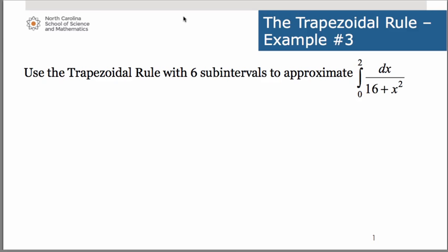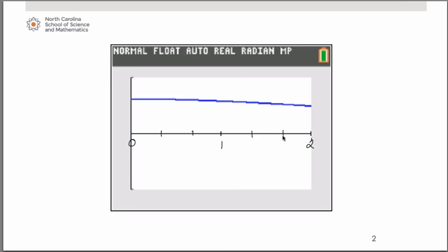We're going to use six subintervals to do that. Let's take a look at what we're trying to do by looking at the graph. Here is the graph of the function 1 divided by the quantity 16 plus x squared.